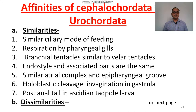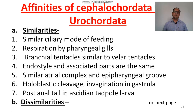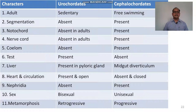Affinities of Cephalochordata with Urochordata. Similarities: similar mode of feeding; respiration by gills; branchial tentacles similar to oral tentacles; endostyle and associated parts similar in both groups; similar atrial complex and epipharyngeal groove; holoblastic cleavage in both groups; invagination in gastrula similar in both groups; post-anal tail in ascidian tadpole.